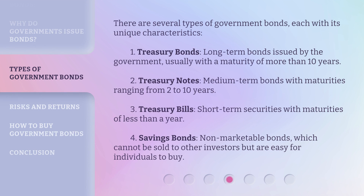There are several types of government bonds, each with its unique characteristics. 1. Treasury Bonds — long-term bonds issued by the government, usually with a maturity of more than 10 years. 2. Treasury Notes — medium-term bonds with maturities ranging from 2 to 10 years. 3. Treasury Bills — short-term securities with maturities of less than a year. 4. Savings Bonds — non-marketable bonds which cannot be sold to other investors but are easy for individuals to buy.